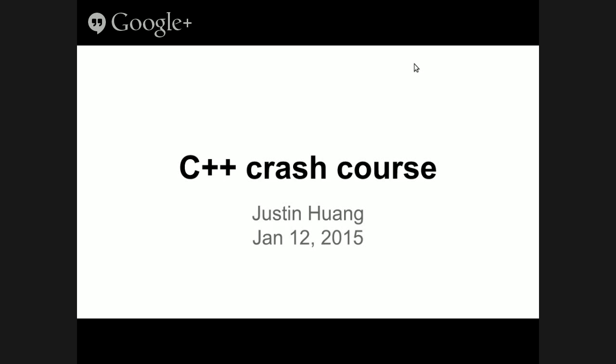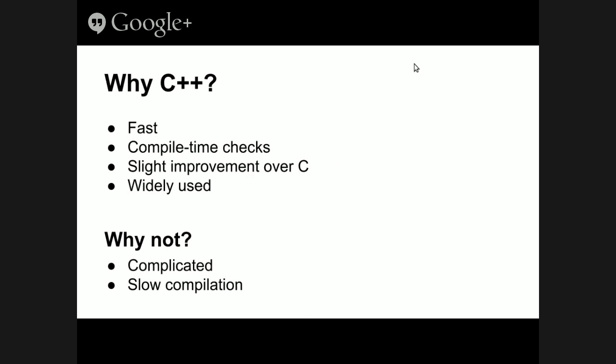You'll notice that C++ is very similar to Java — or rather, Java is very similar to C++. Python is also similar to C++. They're all part of the same family of languages. C was the original language in this family, developed in the 70s at Bell Labs. C++ is an improvement on it, adding many features, but every C program is a valid C++ program.